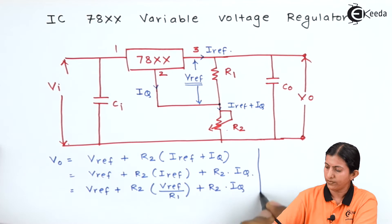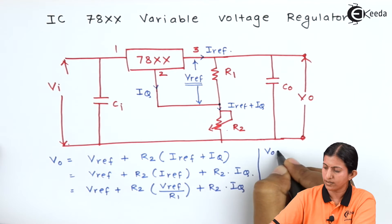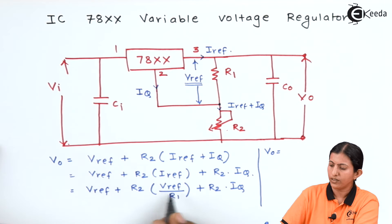V reference plus R2 into V reference divided by R1 plus R2 into Iq. We will write down the equation as Vo equals, keeping V reference common.